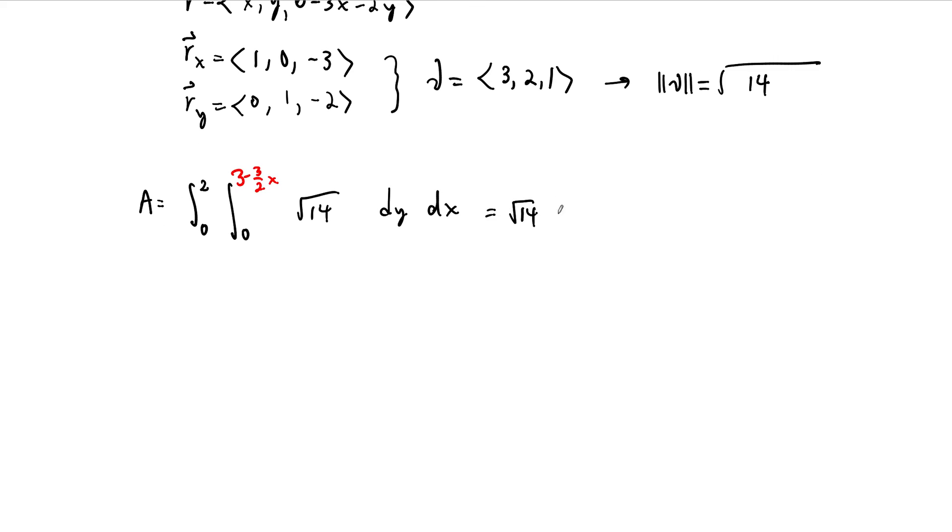And so the answer to this integral is going to be our surface area. Square root of 14 is obviously constant, it can come out. This integral from 0 to 2 is still here. And then this integral is just going to be the difference of these, so 3 minus 3 halves x dx.